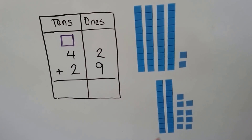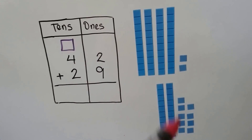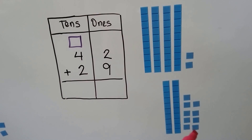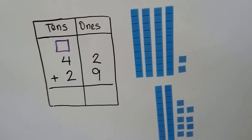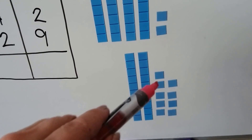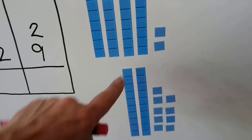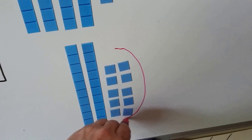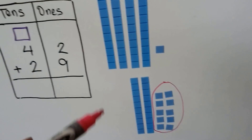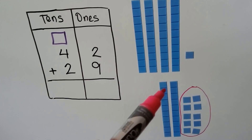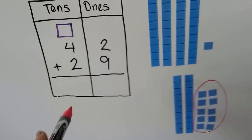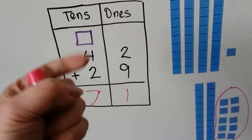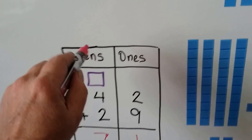Let's try it again. Here we're going to add 42 plus 29. Do we have enough ones to make a new ten? We have four tens and two ones for the 42, and two tens and nine ones for the 29. This is nine: one, two, three, four, five, six, seven, eight, nine. We could take one from the 42 and move it here to make a ten. Now we have one, two, three, four, five, six, seven tens and one one.